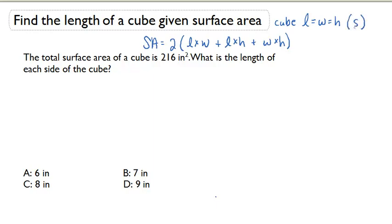Instead of writing them all as different variables, we use S to stand for the side length. Let's rewrite this formula to incorporate S's instead of L's, W's, and H's. That means surface area would equal 2 times S times S plus S times S plus S times S.